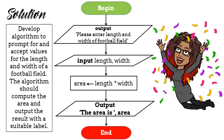Now let's look at the solution to this problem. It says that we want to develop an algorithm to prompt for and accept values for length. So notice we begin. However, we move to an output. Why are we getting an output? Notice this will be displayed on the screen for the user to see. The user will be prompted to please enter length and width of the football field.